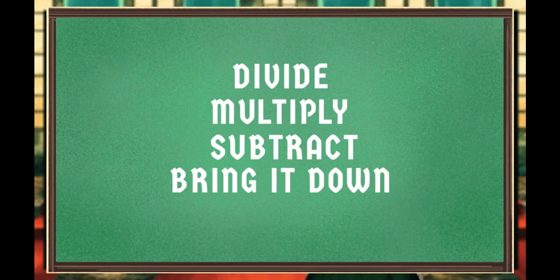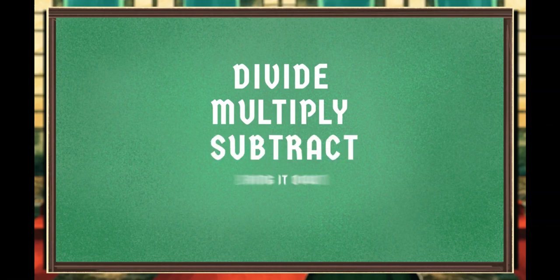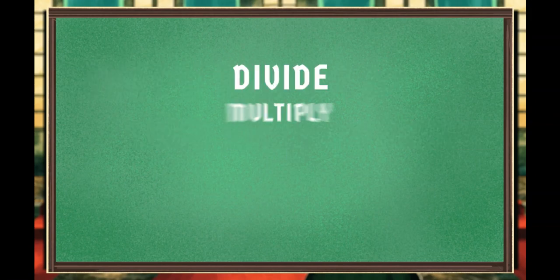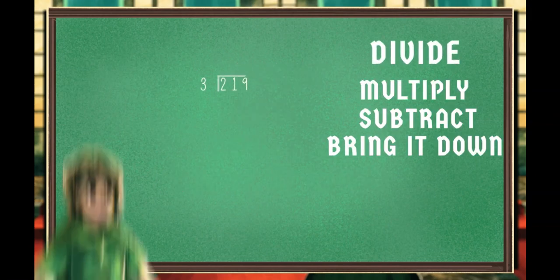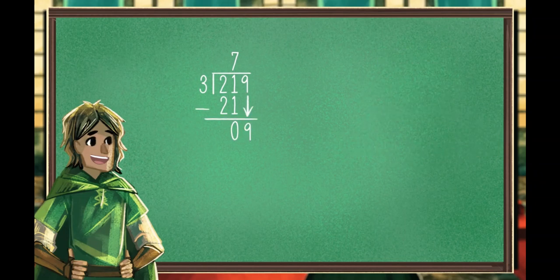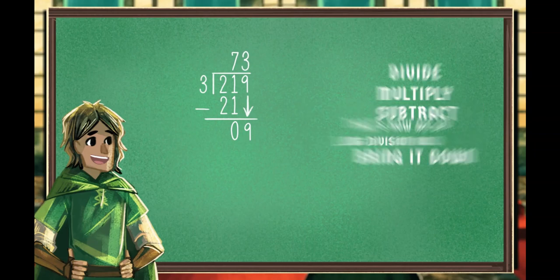Divide, multiply, subtract and bring it down. Divide, multiply, subtract and bring it down. That's how we do long division now.